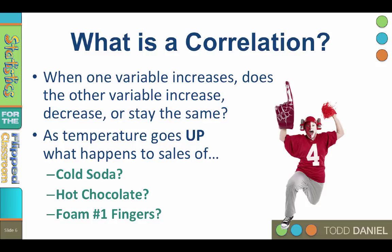How about the sales of those big foam number one fingers? How does that relate to temperature? Well, it stays the same. There's really no relationship between the temperature and the sales of the foam number one fingers. Temperature goes up, foam fingers may go up or go down, because those variables are unrelated. So we have three options: when one variable increases, the other variable can increase, decrease, or stay the same.